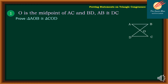For our example number one, we will use the illustration on the right side. O is the midpoint of AC and BD. AB is congruent to DC, and we would like to prove that triangle AOB is congruent to triangle COD.